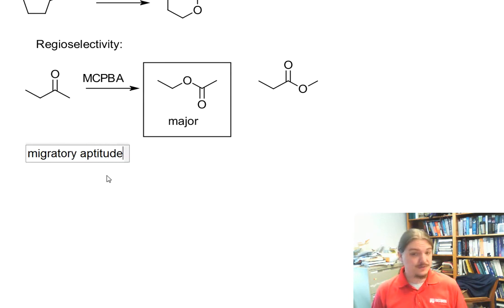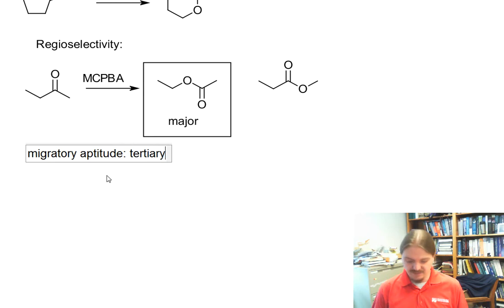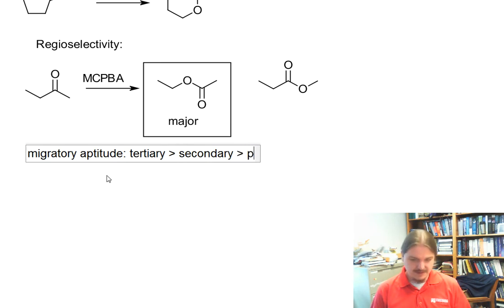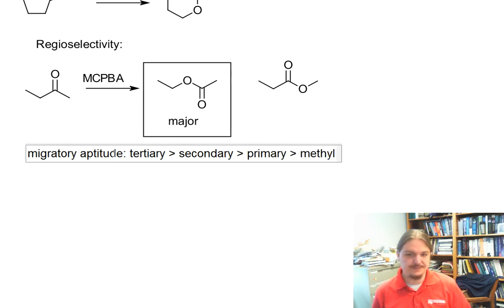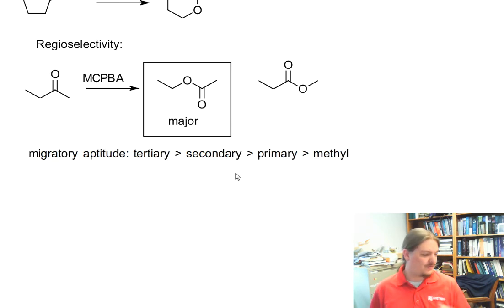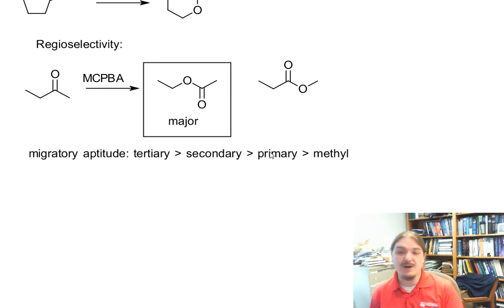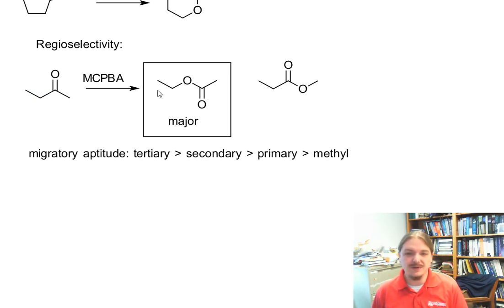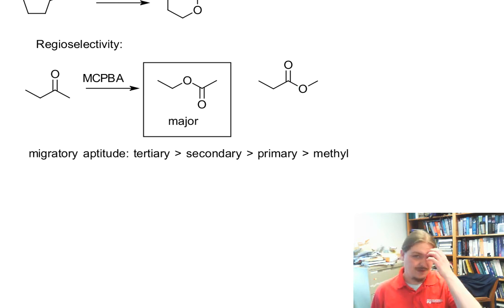In general, these reactions follow a predictable pattern called migratory aptitude. For the most part, migratory aptitude follows a pattern you may already be familiar with: tertiary is faster than secondary, secondary is more likely than primary, and primary is more likely than methyl. So with methyl ethyl ketone, the primary ethyl group migrates preferentially over the methyl group.